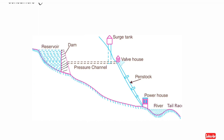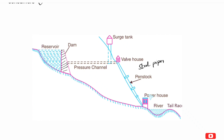The valve house controls the closing and opening of water flow. At the bottom, there is a penstock, which is a general steel pipe. Water flows down through the steel penstock pipes into the powerhouse below.